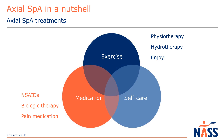In terms of self-care, if you're new to axial SpA, it's vital that you give yourself time to understand the condition, learn how it affects you, and allow time to gradually accept it. Managing flare-ups can be quite tricky, but there are lots of tools you can use, and over time you can create your own personal flare toolkit — somewhere you can go during a flare to access all the self-care tips and tricks to help you manage your symptoms. We have a video on creating your toolkit on the MyAS MyLife webpage.